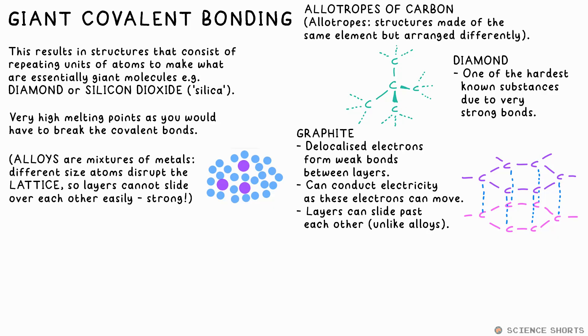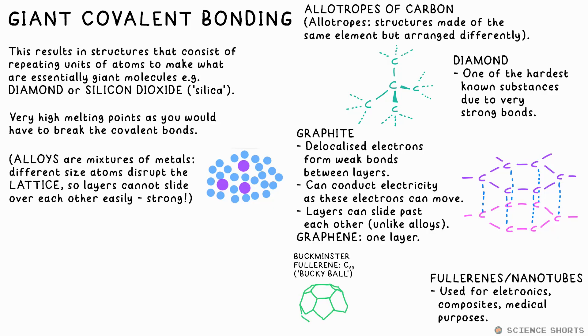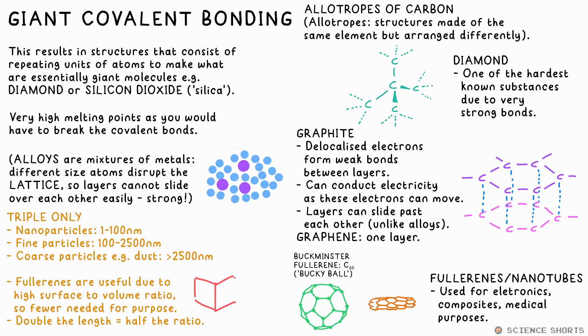Back to carbon allotropes, graphene is just a single layer of graphite. Fullerenes are 3D structures of carbon atoms, for example, Buckminster fullerene is a spherical football-like structure consisting of 60 carbon atoms. Fullerenes that have a tube shape are called nanotubes. Surface to volume ratio is just one divided by the other. If the length of a side of a cube doubles, this ratio halves. As nanoparticles are tiny, this ratio is huge for them, which means that fewer of them could be needed to fulfil a purpose compared to larger ones.